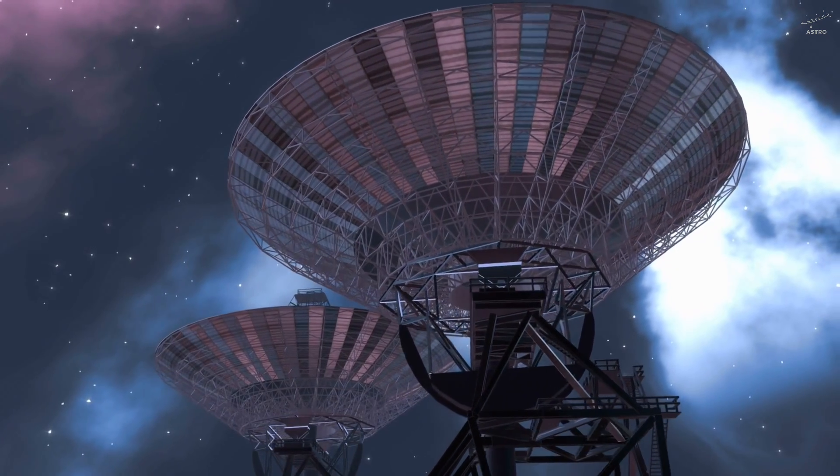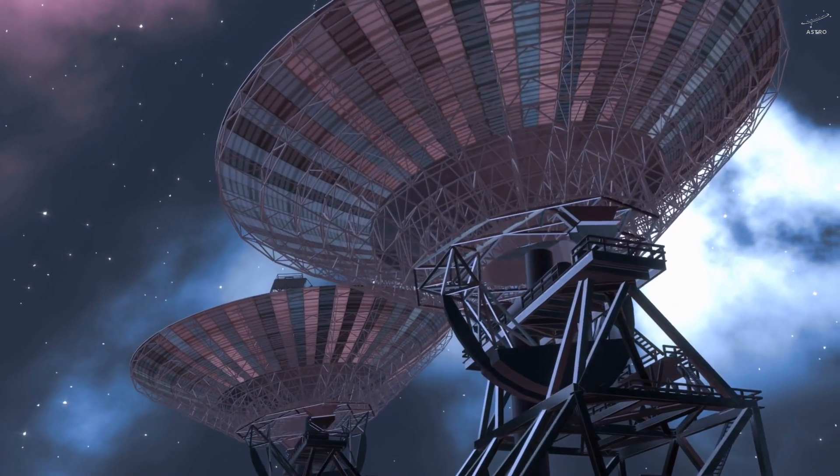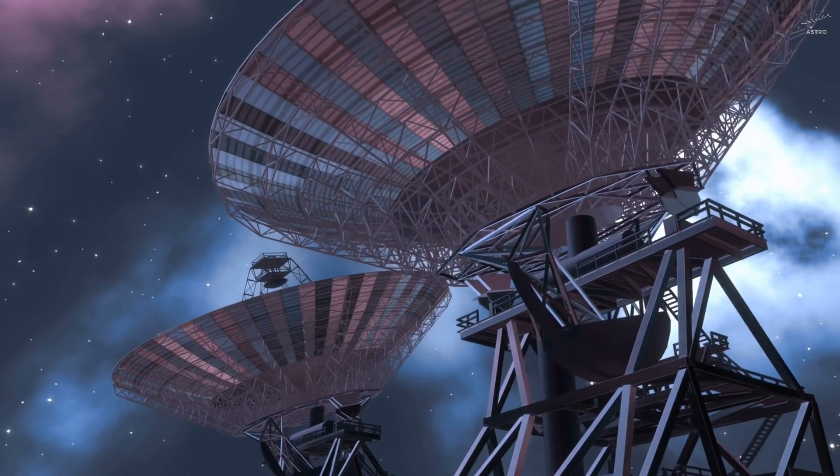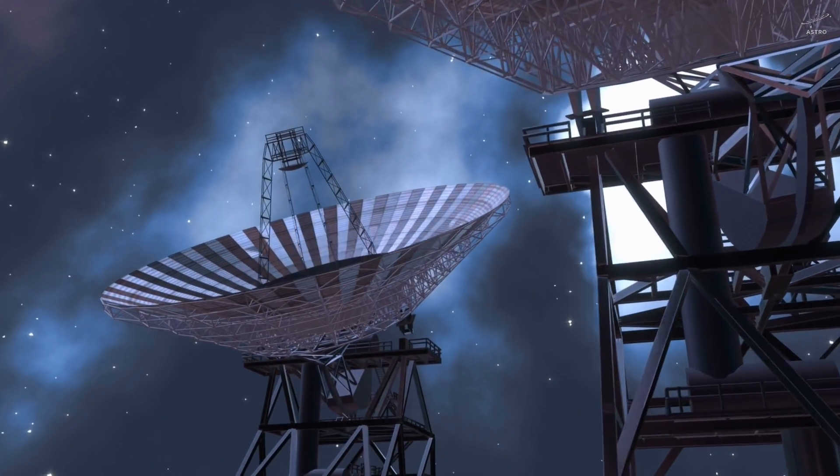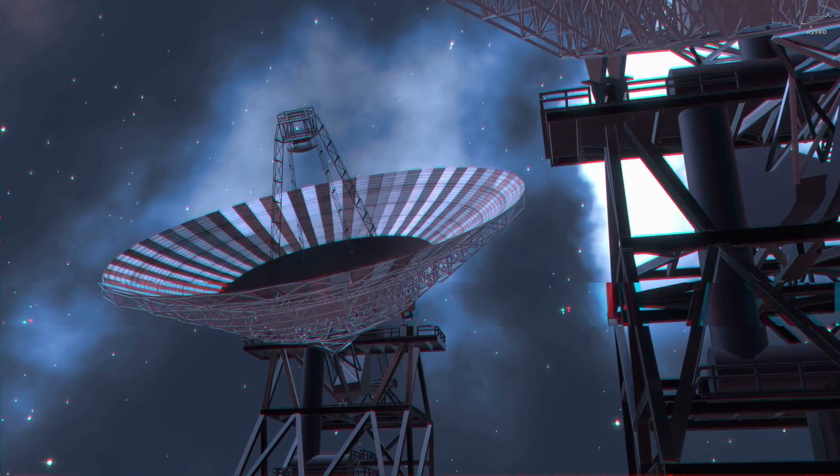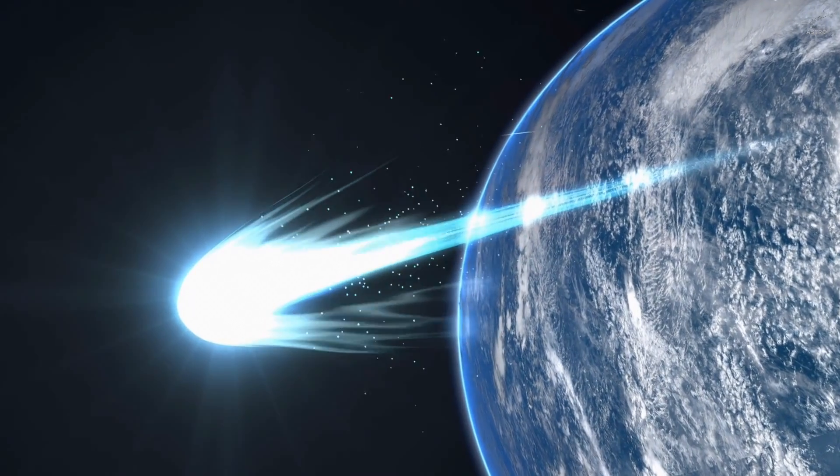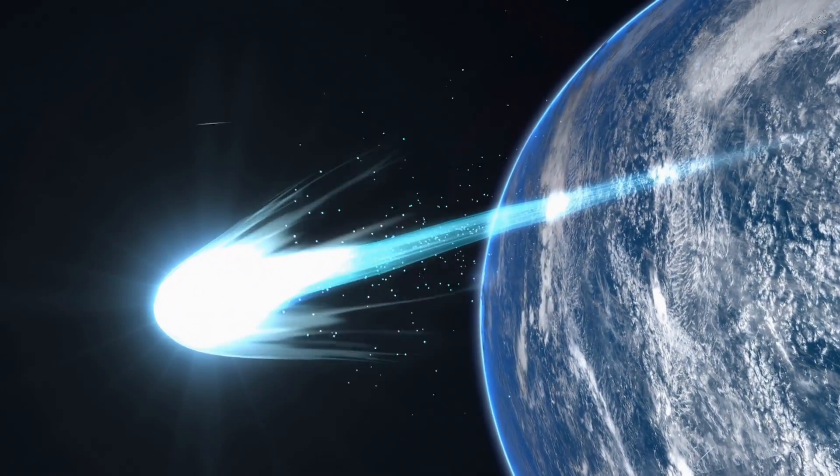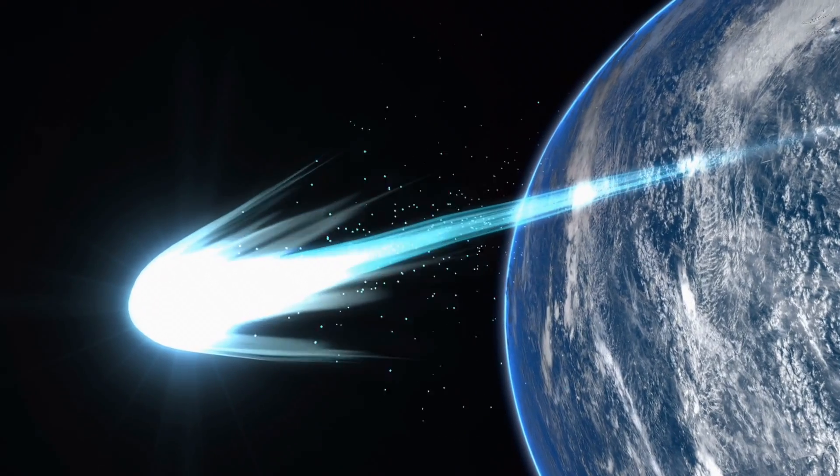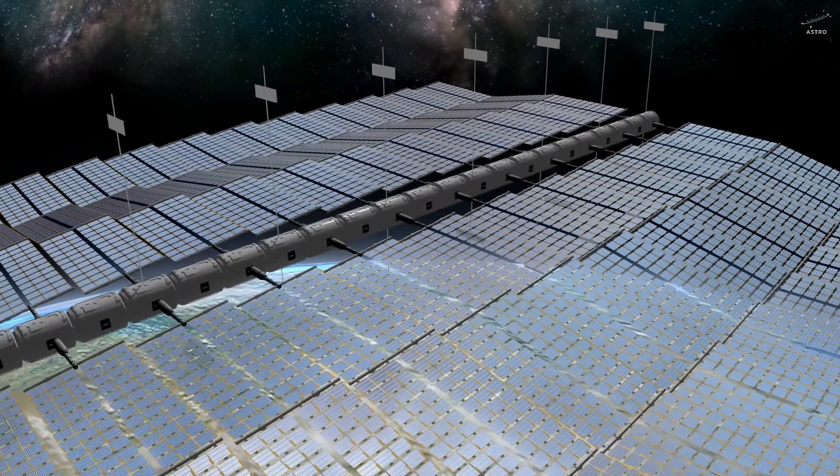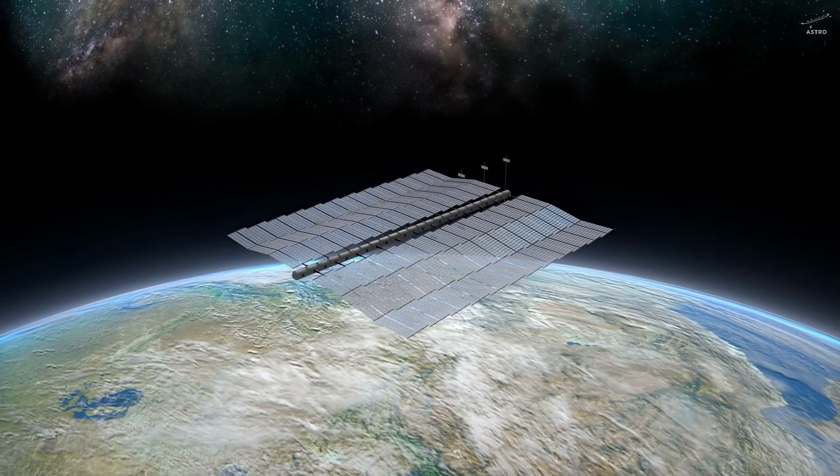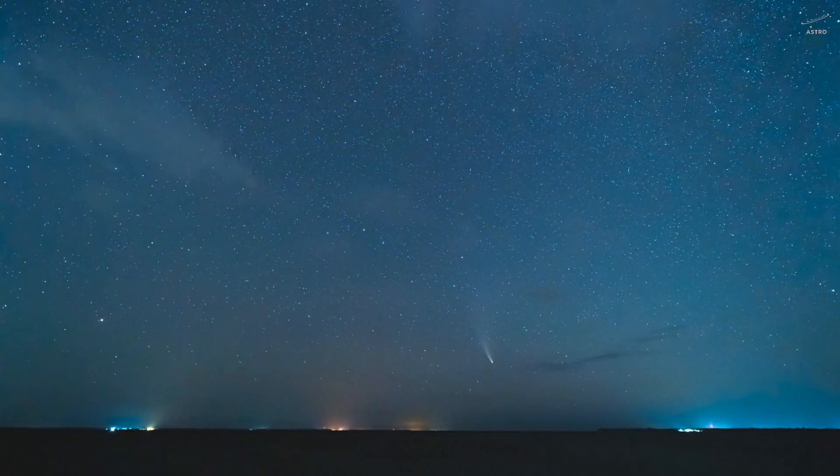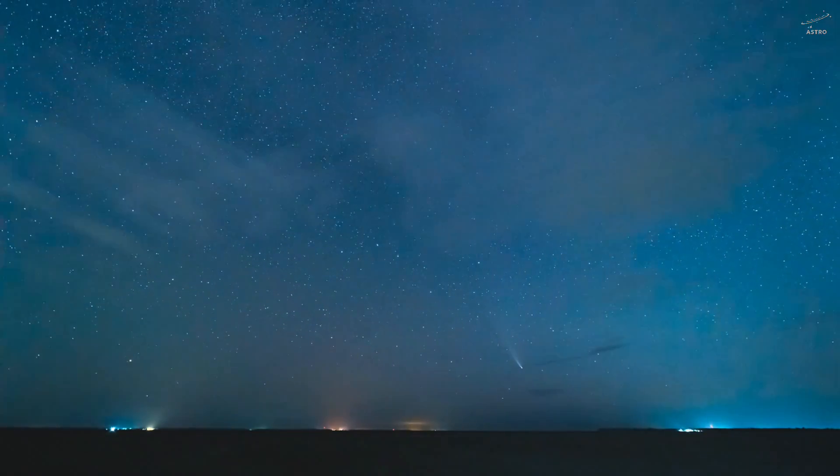Challenge two: how do we catch these particles? Thankfully, scientists have found a way to catch these high-energy cosmic rays by using Earth's atmosphere as a giant detector. When a high-energy cosmic ray collides with molecules in the atmosphere, it triggers a massive chain reaction, creating a shower of secondary particles that spread out like a cone over a vast area. This phenomenon is called an air shower. Facilities like the Pierre Auger Observatory in Argentina and the Telescope Array in Utah use hundreds of detectors spread across thousands of square kilometers to capture these air showers.